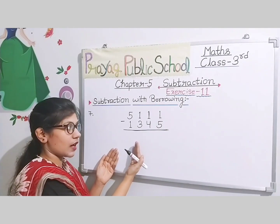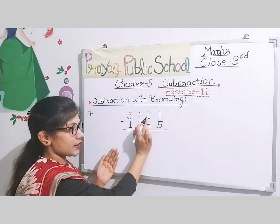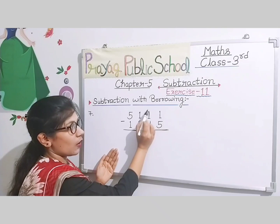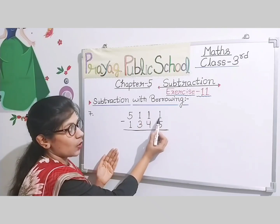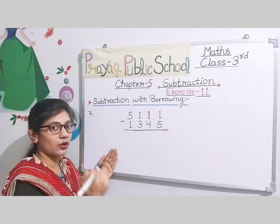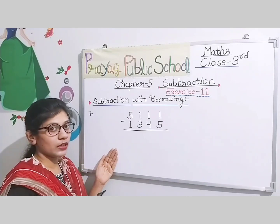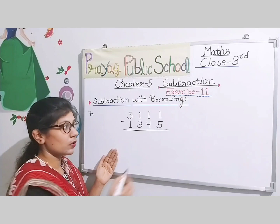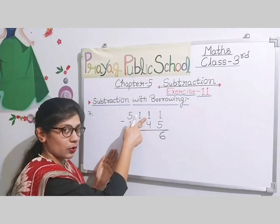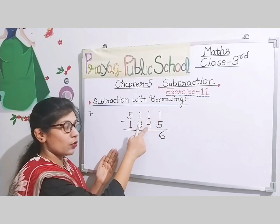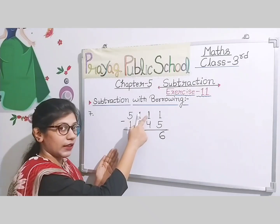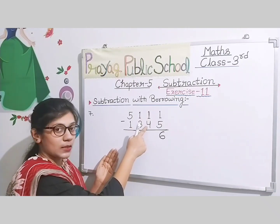So here I take question number seven. 11 minus 5, we get 6. Ab yaha pe 0 bacha, because isne borrow diya tha — 0 mein se 4 ka subtraction nahi ho ga. Aap borrow karoge — yaha 0 tha, 1 liya to 10. 10 minus 4 karne pe milega 6.